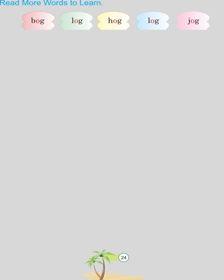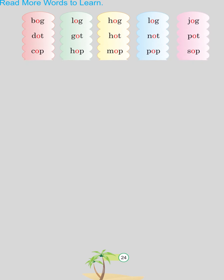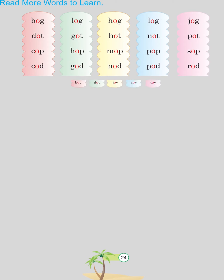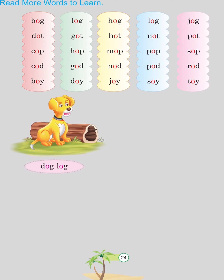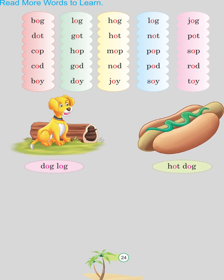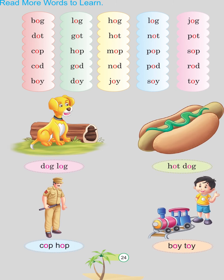More O-sound words: Dot, Hot, Not, Pot, Cop, Hop, Mop, Pop, Soap, God, Nod, Pod, Rod, Boy, Joy, Soy, Toy, Dog, Log, Hot, Cop, Hop, Boy, Toy.